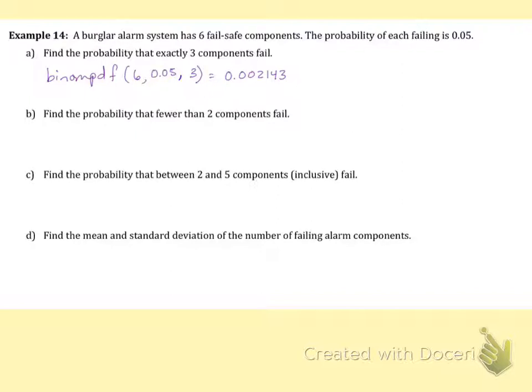On part B, it says find the probability that fewer than two components fail. So let's think about what fewer than two means. Fewer than two does not include two.